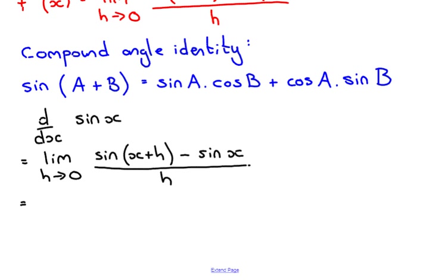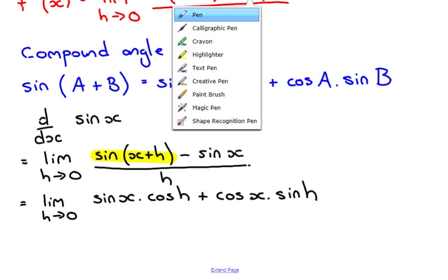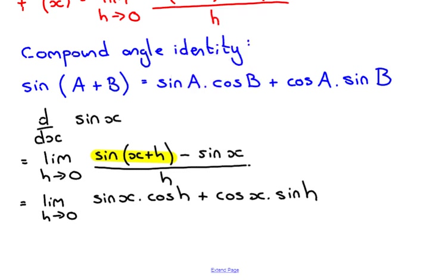This is where we use the compound angle identity — we have sine of an angle plus an angle. Applying the compound angle identity, we get: the limit as h tends towards zero of sine x times cos h plus cos x times sine h, minus sine x, all divided by h.